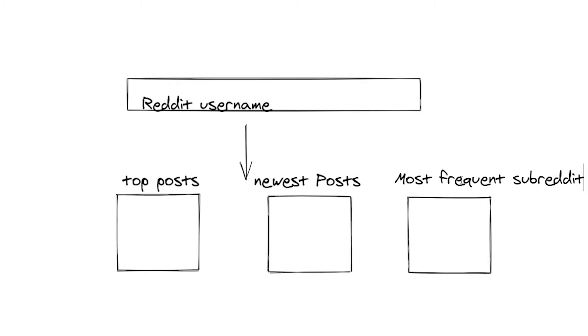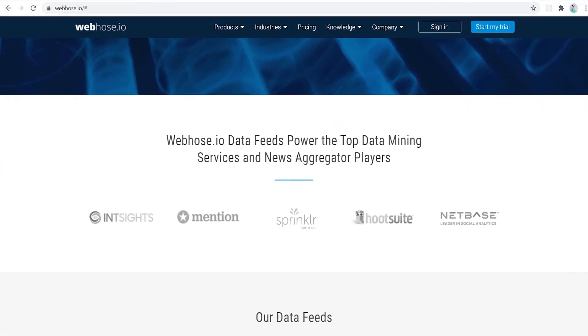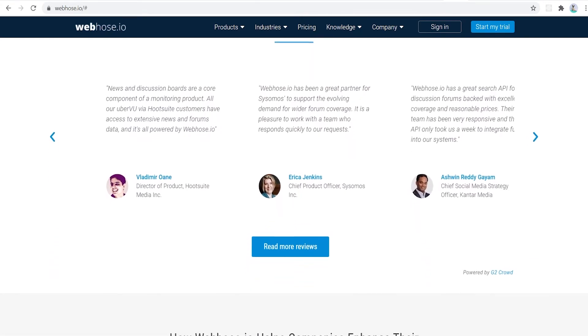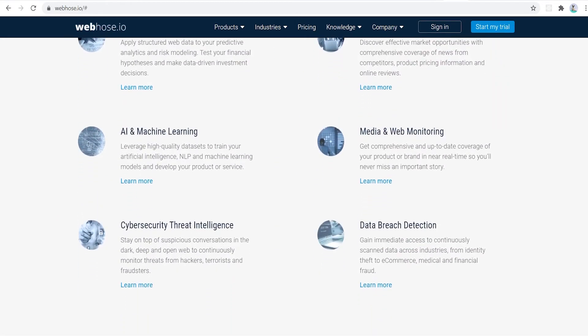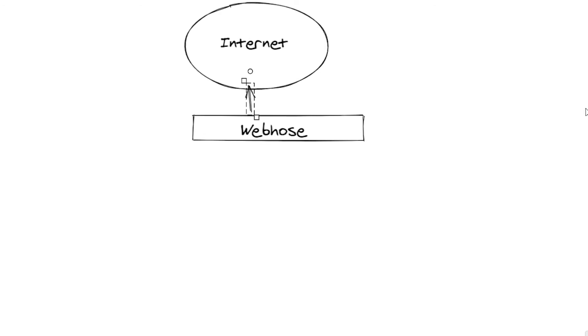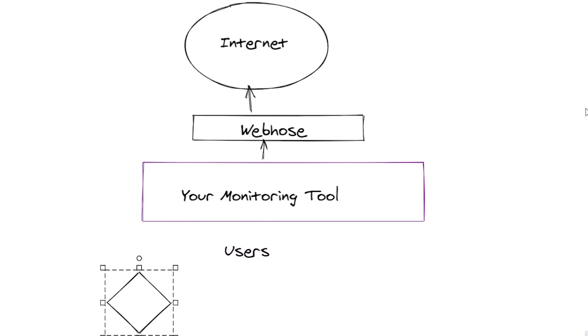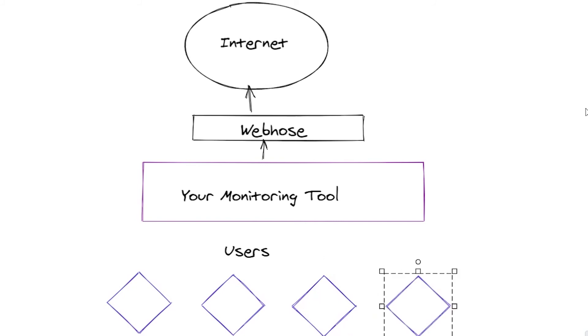The final project for this video is making an online reputation management tool using the Webhose API, which collects information across the internet and makes it easily accessible. You'll create an app that allows non-technical users to input a few keywords through a UI, and then using the Webhose API it will track brand names or mentions of those keywords. You could combine that with something like Twilio to notify people when they've been mentioned online. The types of people who would use this are those working in customer service, marketing, or public relations — pretty much every company wants to be aware of what people are saying about them online, so it's a tool that would look very good on your resume.